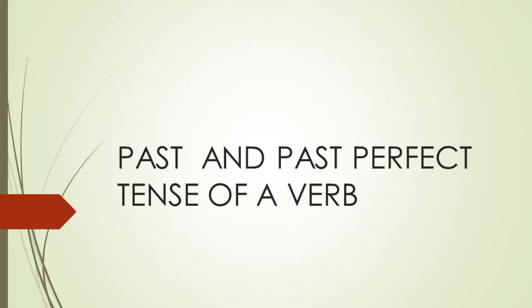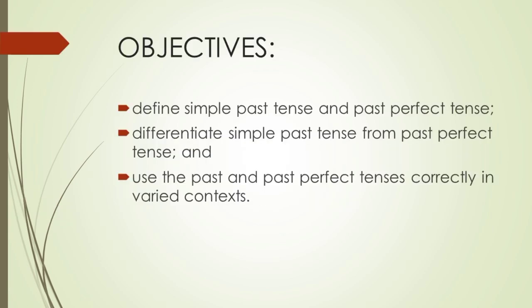Our lesson in this episode is the simple past and past perfect tense of a verb. At the end of our lesson, you will be able to: first, define simple past tense and past perfect tense; second, differentiate simple past tense from past perfect tense; and third, use the past and perfect tenses correctly in varied contexts.